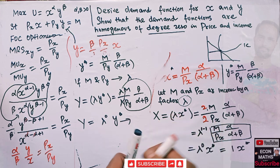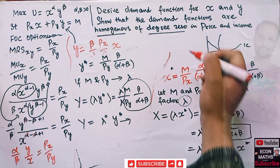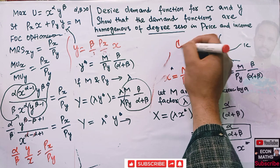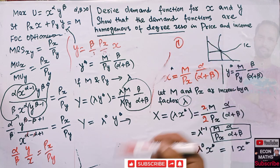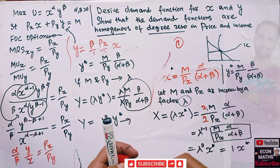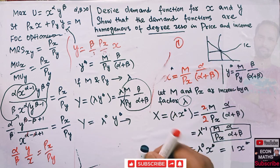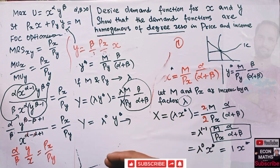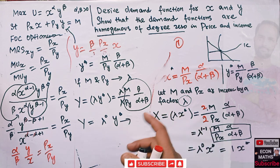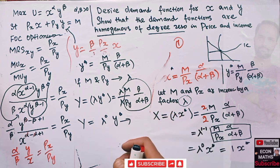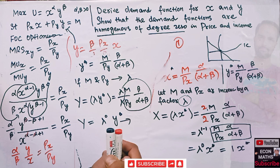This is what is meant by degree of homogeneity of zero. If we had degree of one, then doubling the price would also have increased our demand function by a factor of two. But that is not the case here. I hope this video made things clear. Thank you.